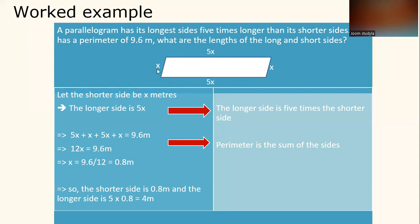So we know that the shorter side is X meters, and the longer side is 5X. The longer side is five times the shorter side. So we have perimeter, the sum of the sides, is 5X plus X plus 5X plus X equals 9.6 meters.